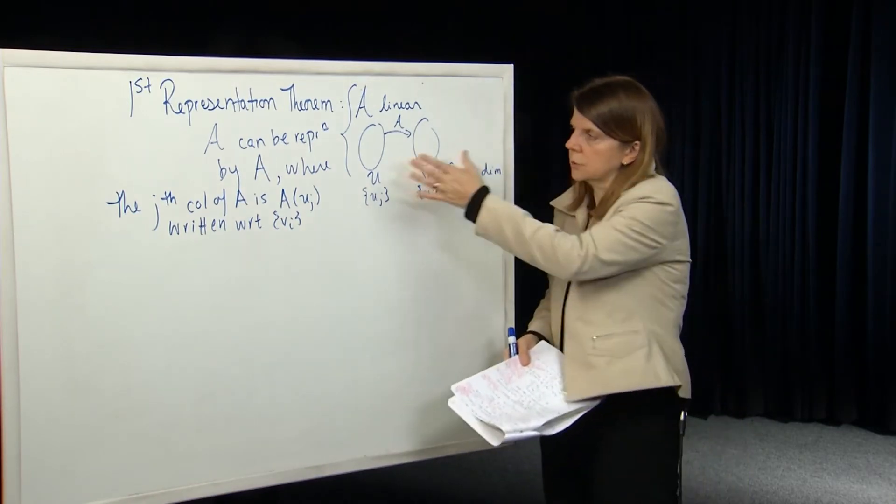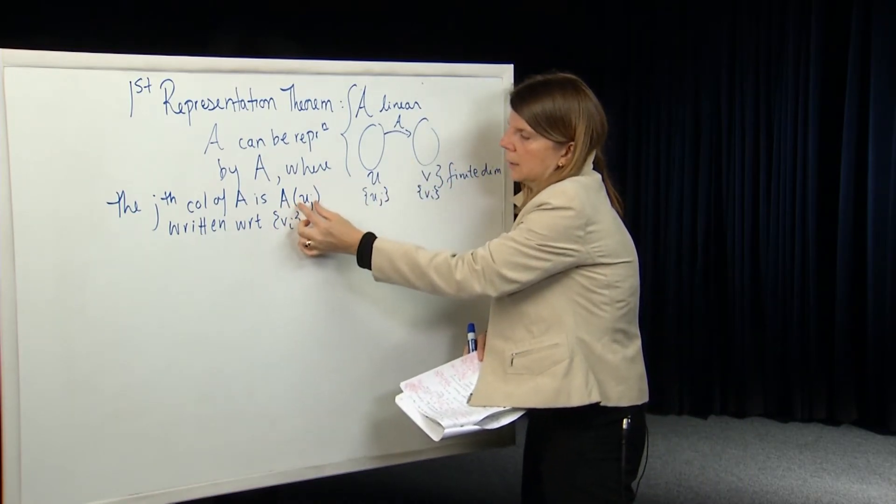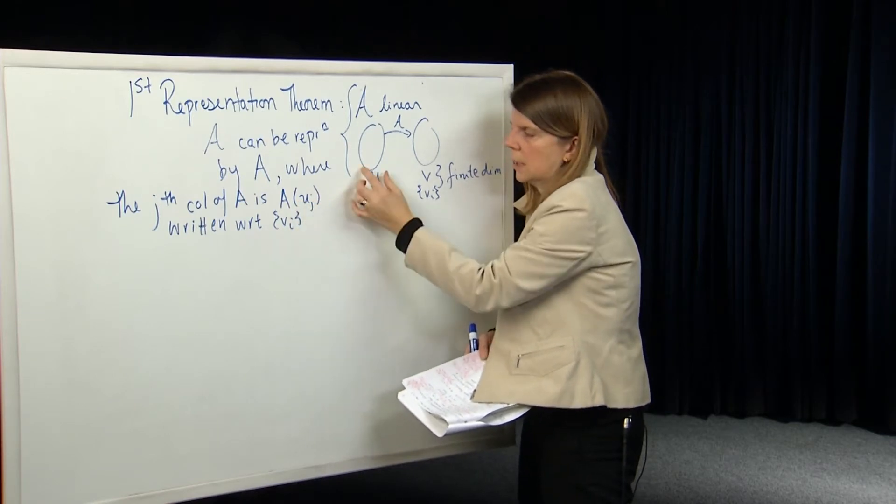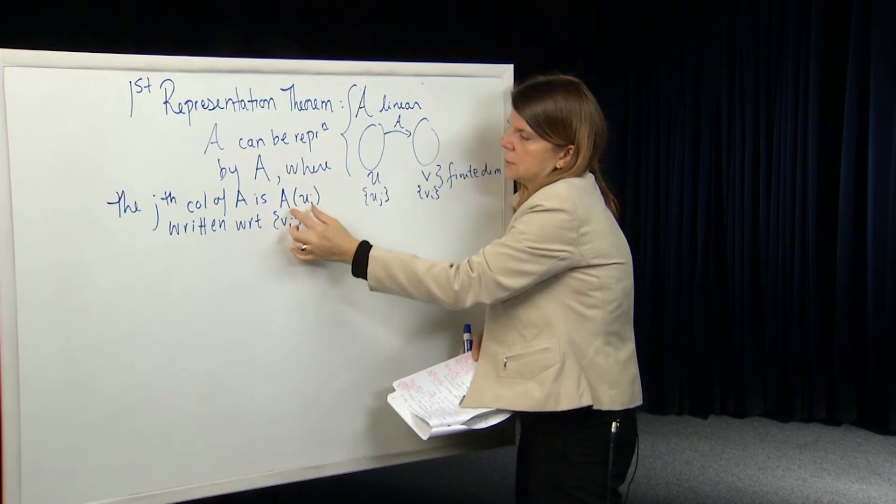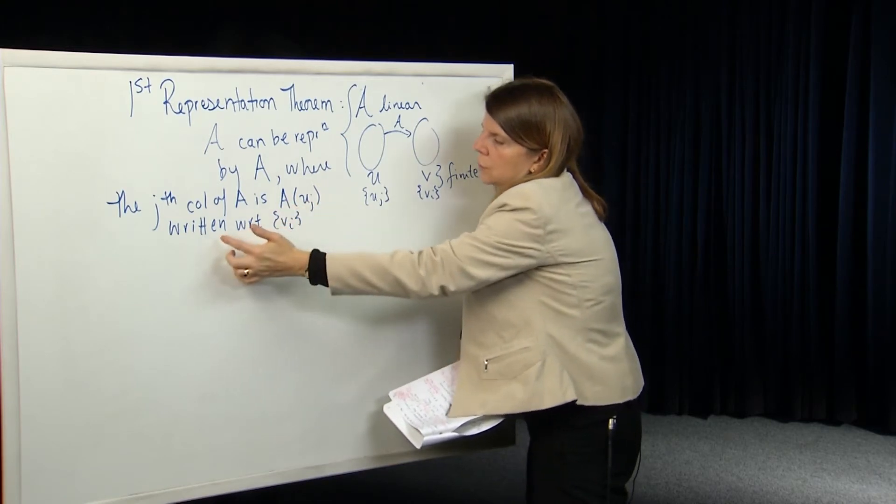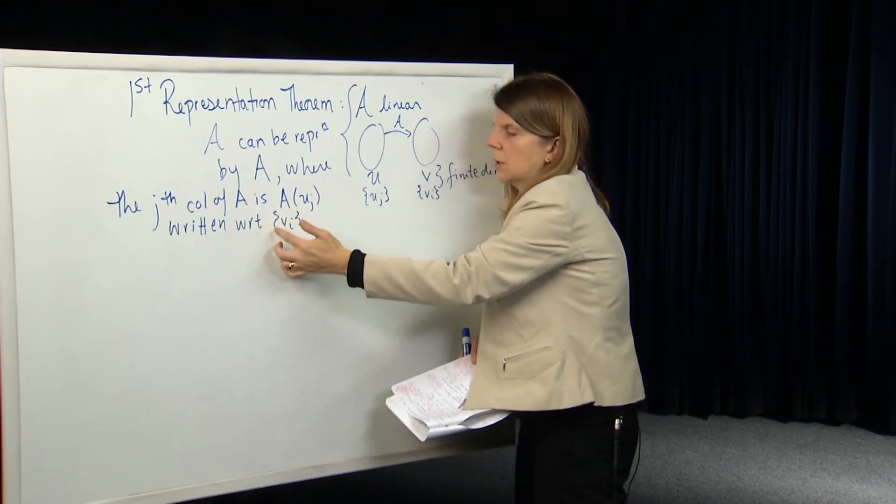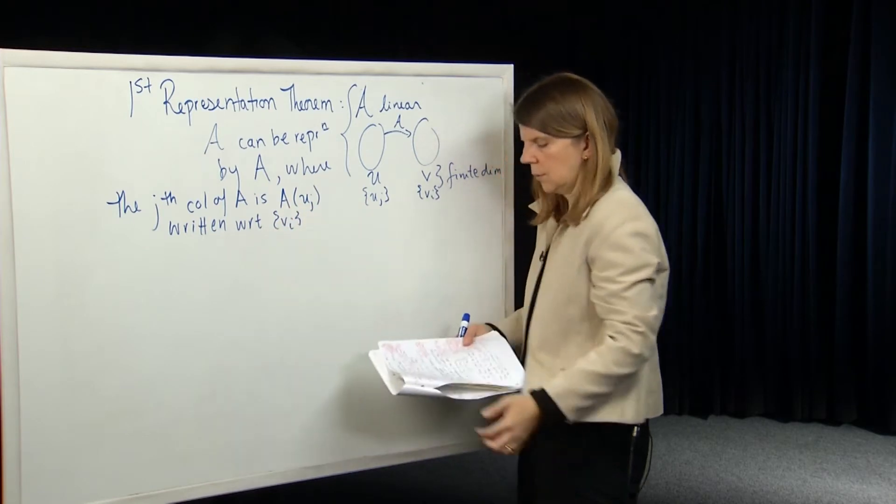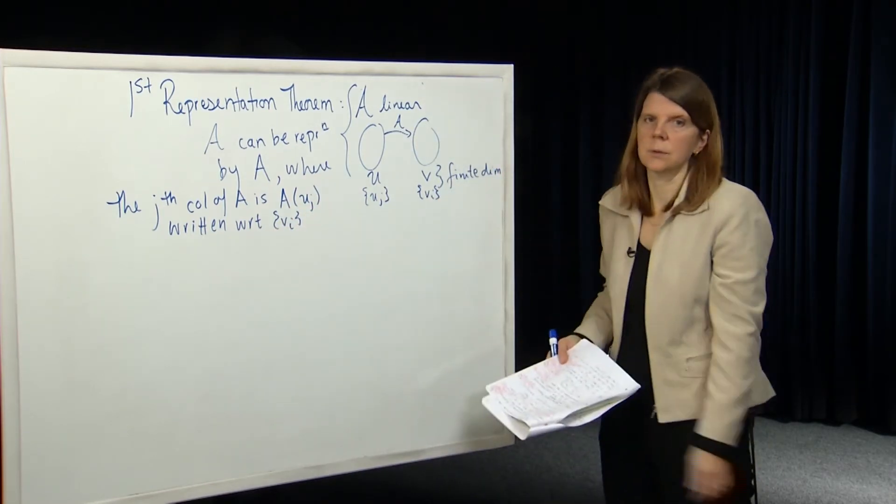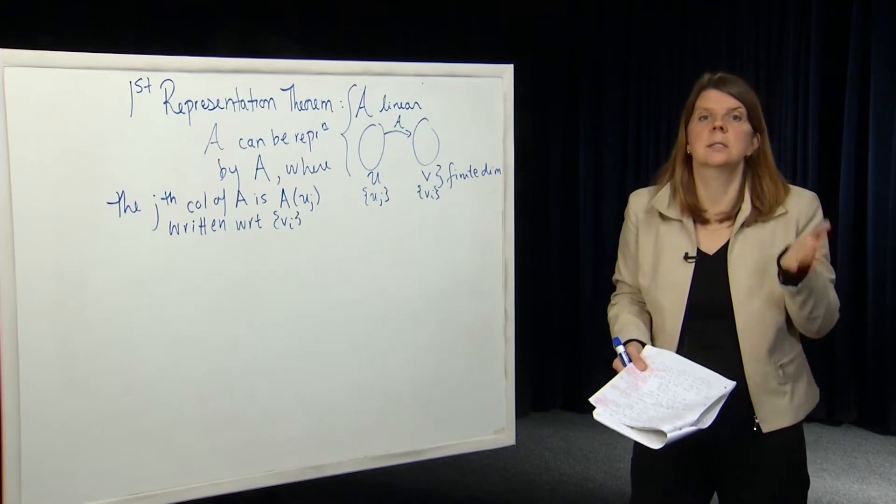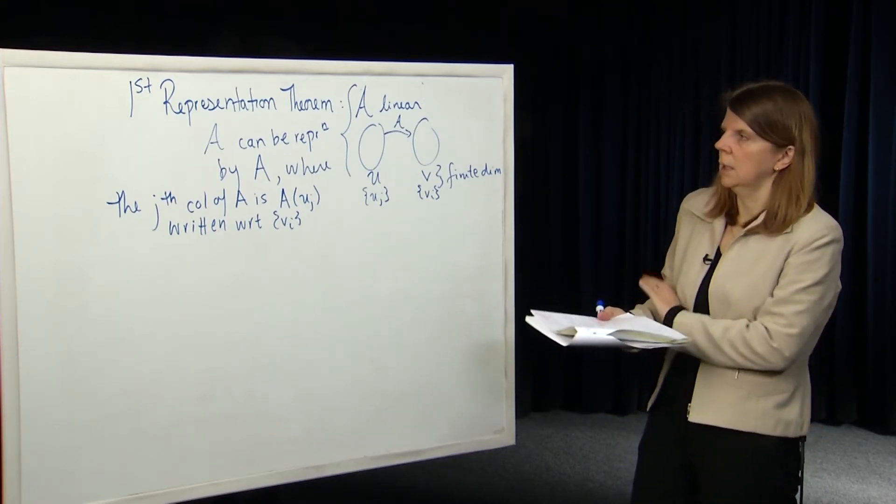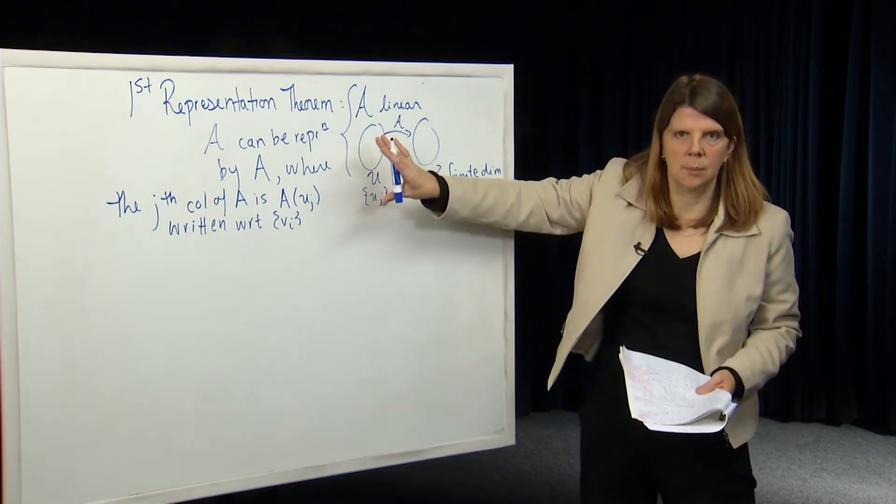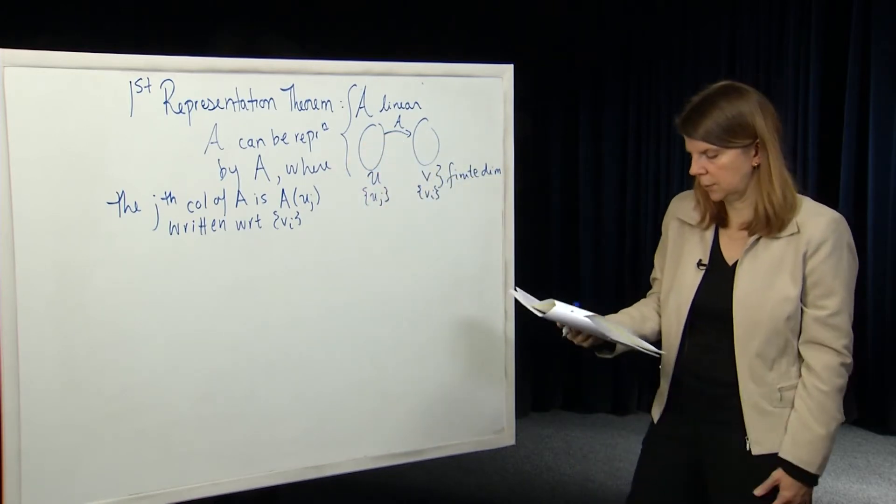So you've got your two bases. You look at A operating on each of the basis elements in the domain. So for the first column of A, you take A of U1, and then you figure out what the coefficients are of A of U1 when you're writing that with respect to the basis over in the codomain. And that gives, those coordinates give you the first column of the matrix A, et cetera. So we have a representation theorem. This is very important, and we've gone through that before.